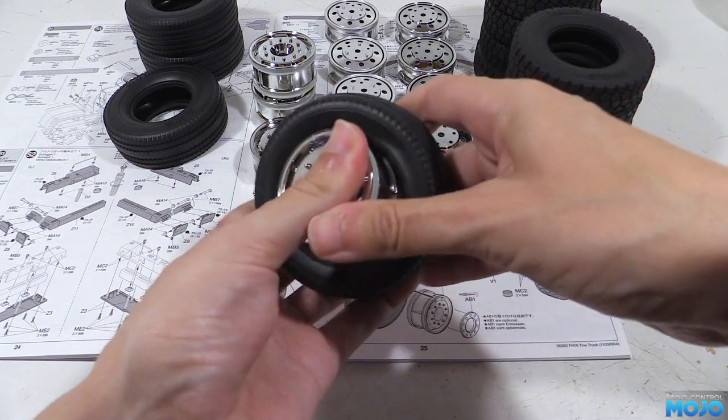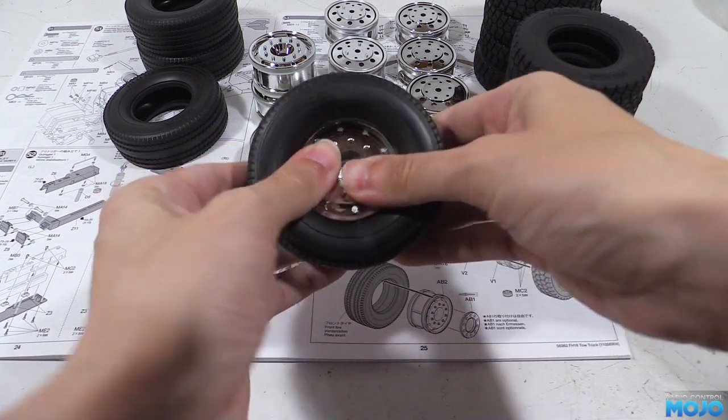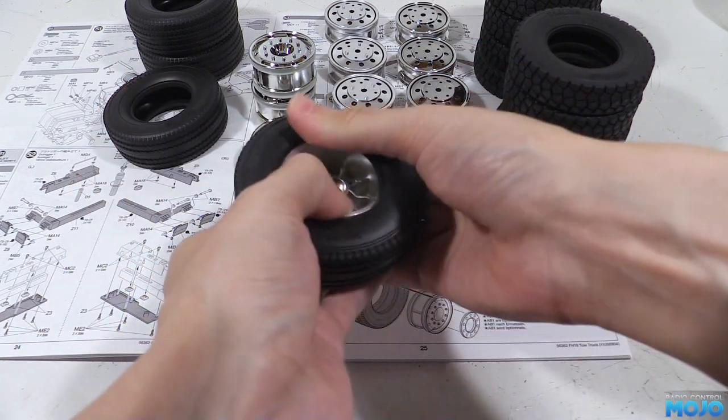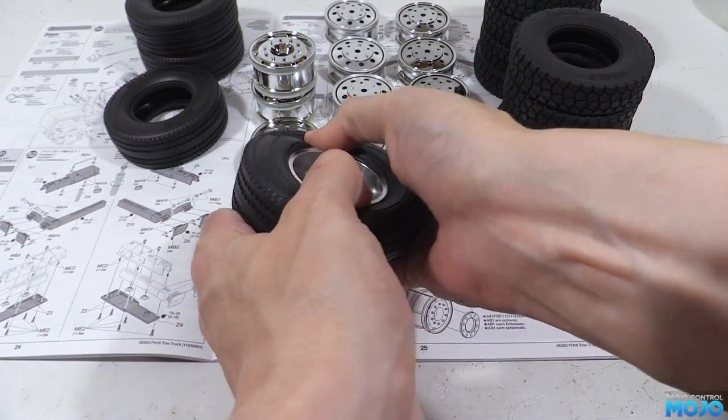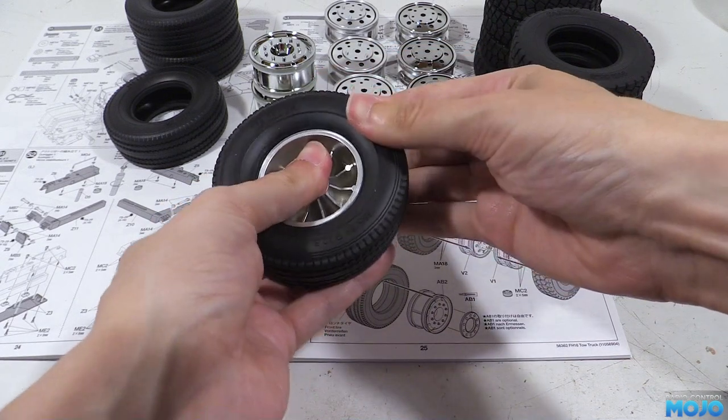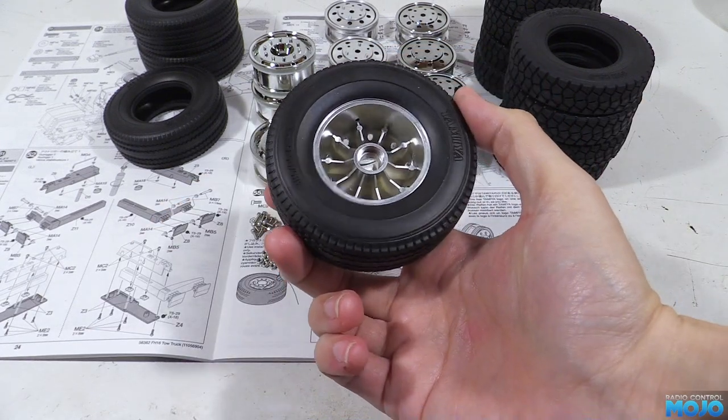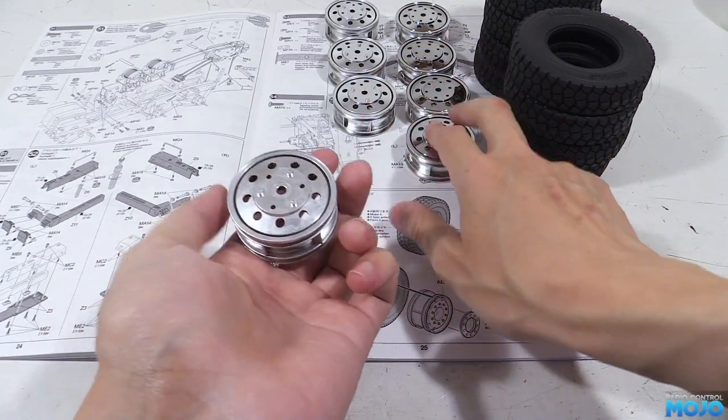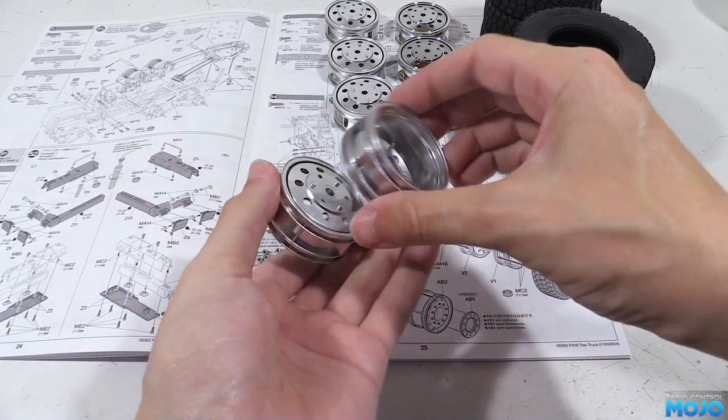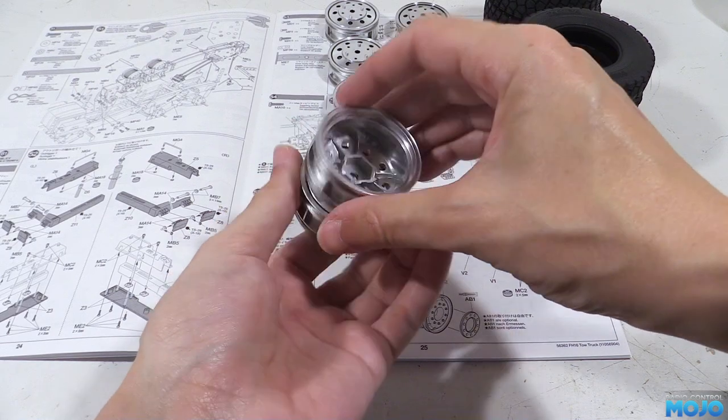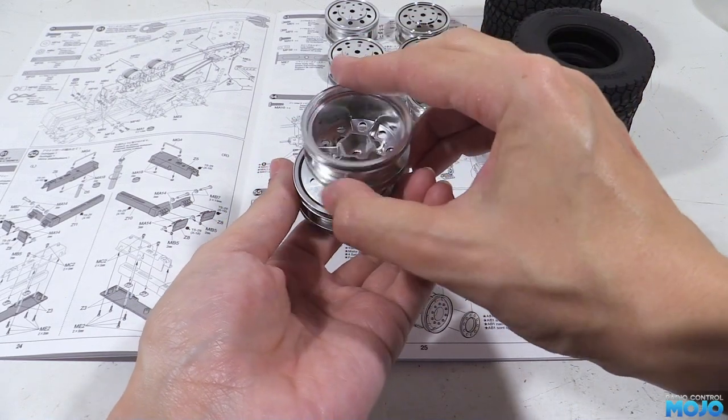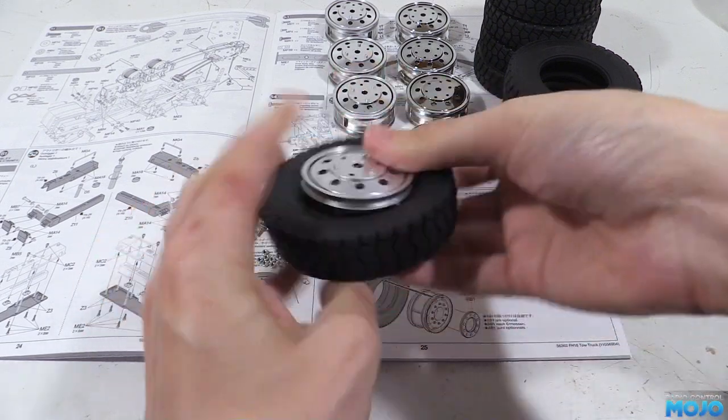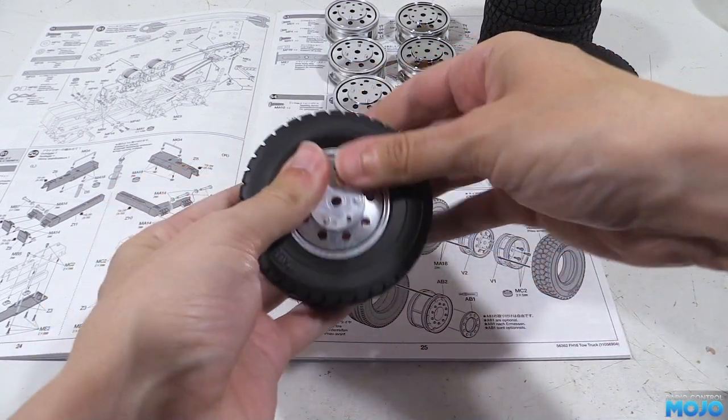For the front ones there's not much to them, we just need to stretch the tyres over the wheels. Now the instructions do say to glue them on too, but for indoor use I've never really found the need. Even cruising around a car park pulling a trailer, I've not had a tyre pop off a wheel. The rears are a little bit more involved. We need to offer up an inner and an outer and use the screws and nuts, but to make it easier it's best to fit all of the tyres first. Otherwise it can be a bit tricky to get the inner beads to sit nicely in their slots.